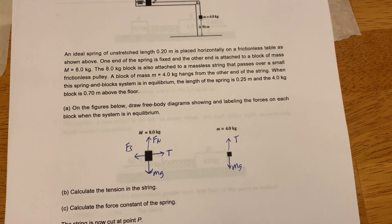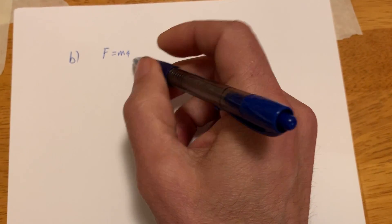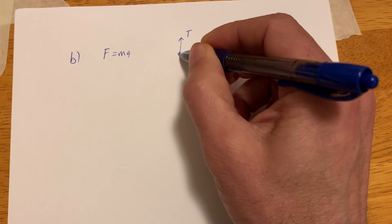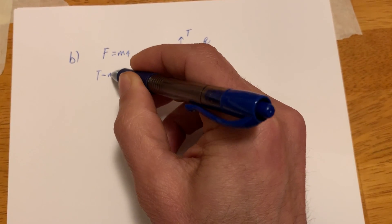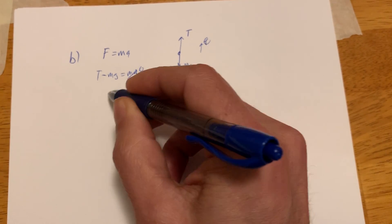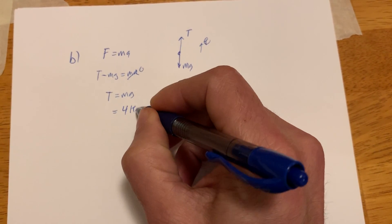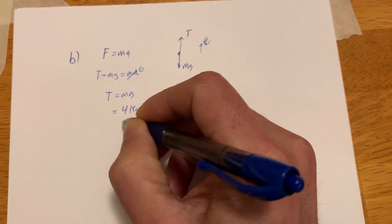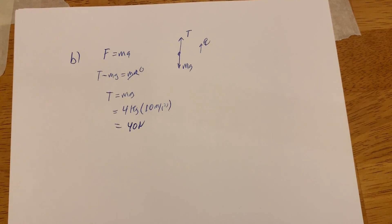Part B: calculate the tension in the string. Let's go to some paper. Everything is in equilibrium. F equals ma, so T minus mg equals ma. However, we know everything's in equilibrium, so this whole thing is zero. Bringing mg to the other side, T is equal to mg. The mass is 4 kilograms times 10 meters per second squared, so that gives me about 40 Newtons. So there is the tension in the string.